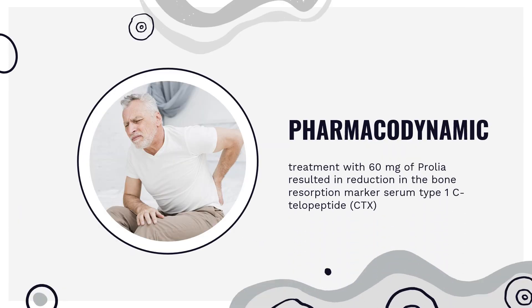Pharmacodynamics: In clinical studies, treatment with 60 mg of Prolia resulted in reduction in the bone resorption marker serum type 1 C-telopeptide (CTX) by approximately 85% by 3 days. Consistent with the physiological coupling of bone formation and resorption in skeletal remodeling, subsequent reductions in bone formation markers — i.e., osteocalcin and procollagen type 1 N-terminal peptide (P1NP) — were observed starting one month after the first dose of Prolia.